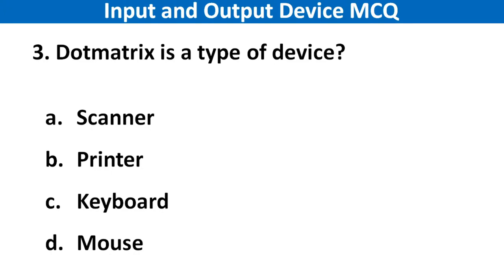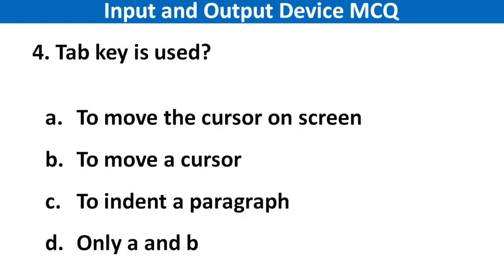Next question: Dot matrix is a type of which device? Right answer is option B: Printer. Next question: Tab key is used. Right answer is option C: To indent a paragraph.